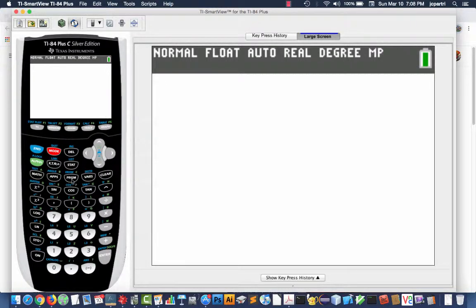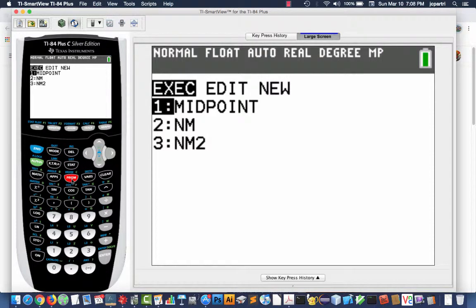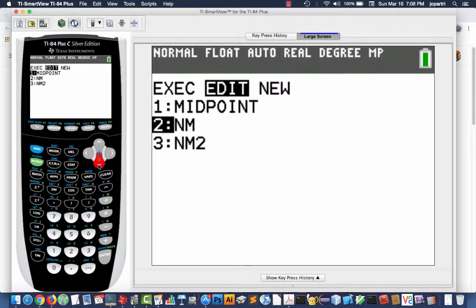What I'm going to do here is I'm going to hit the program key, and I created a program called NM2, which is Newton's Method 2, which is just going to be a copy of the old Newton's Method. So first, let me show you the original Newton's Method.